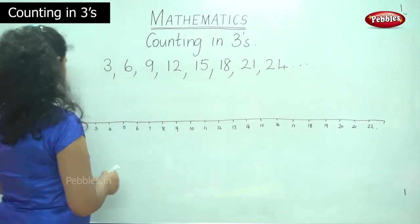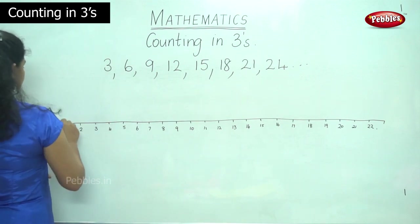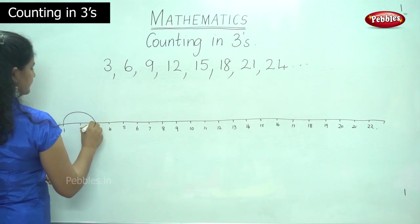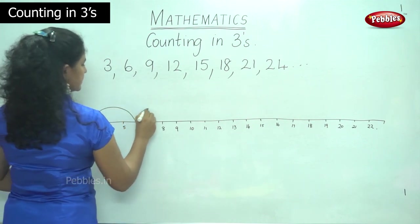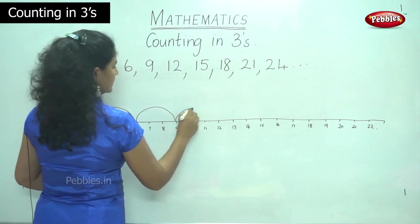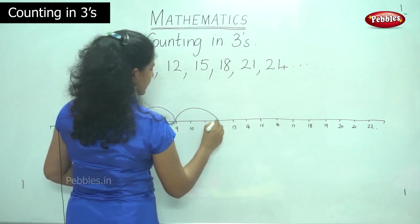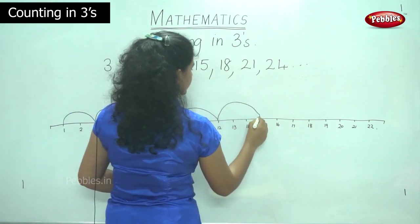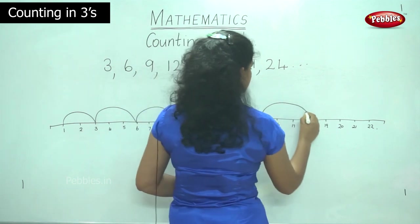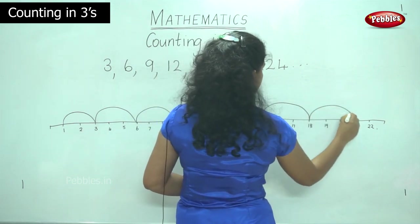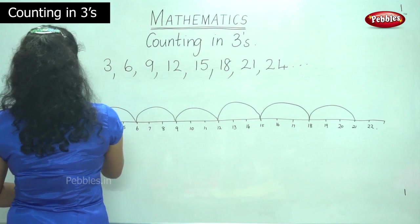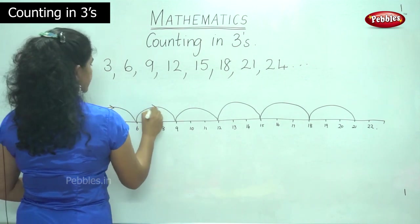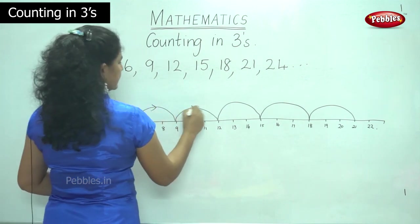And now when we want to count in 3's, we will start from 3, 6, 9, 12, 15, 18, 21 and so on. So we count in 3's — we will jump count in 3's.